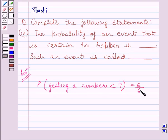Now, this is further equal to 1. We know that there are only 6 possible outcomes in a single throw of dice and all outcomes are less than 7. So, probability of getting a number less than 7 in a single throw of dice is equal to 6 upon 6 which is equal to 1.